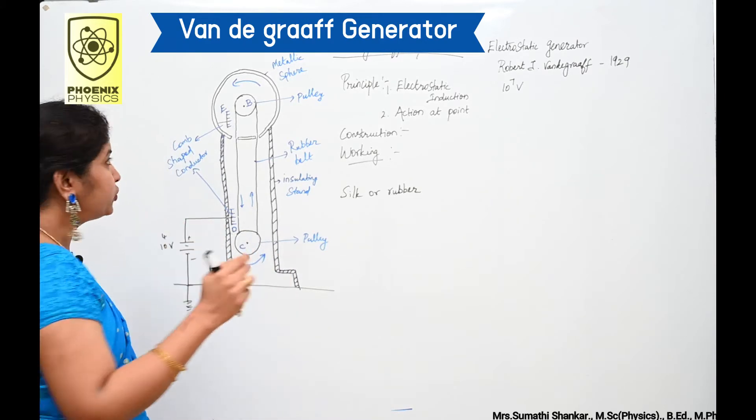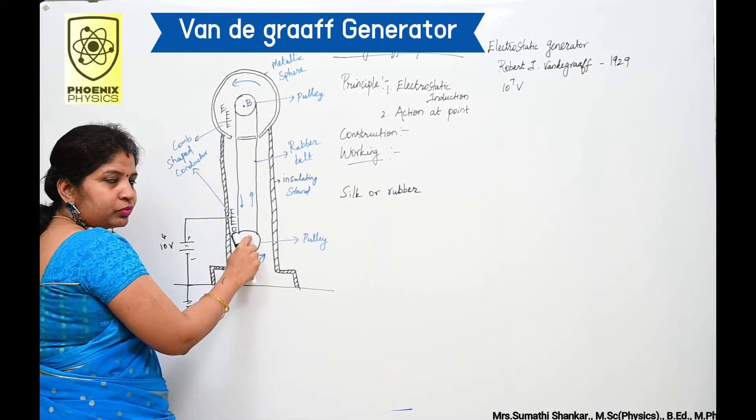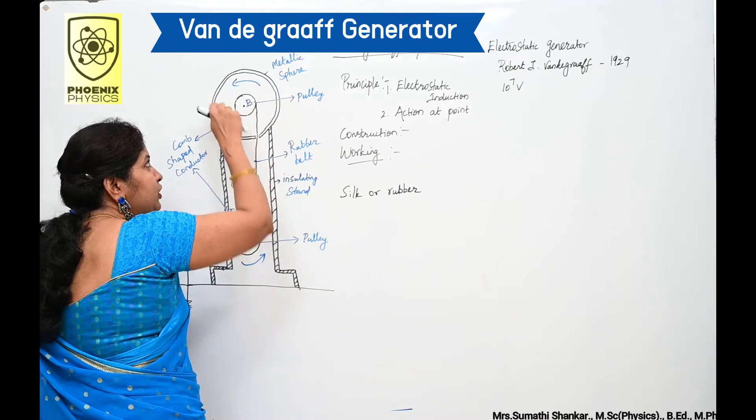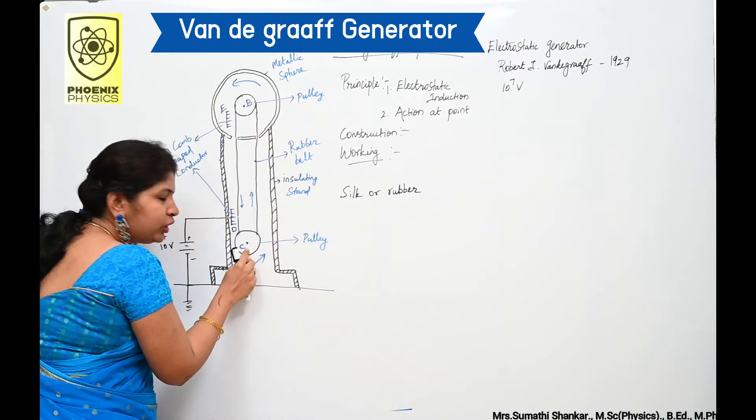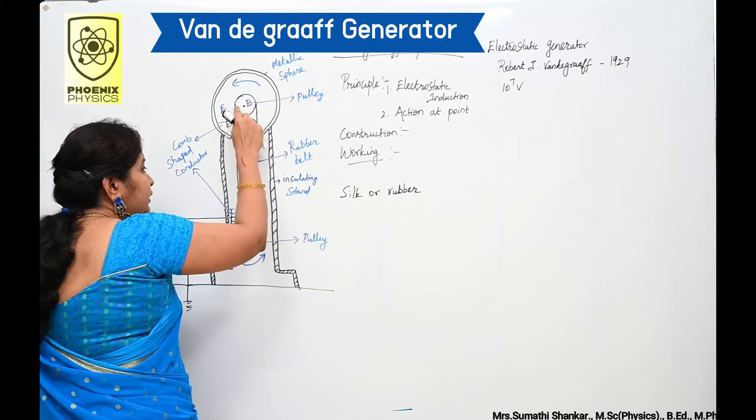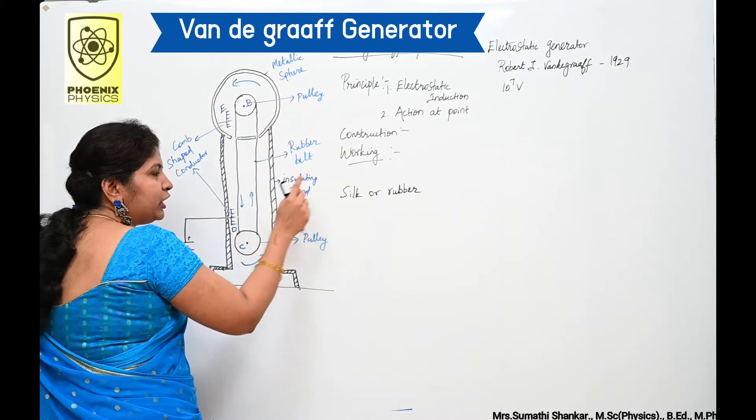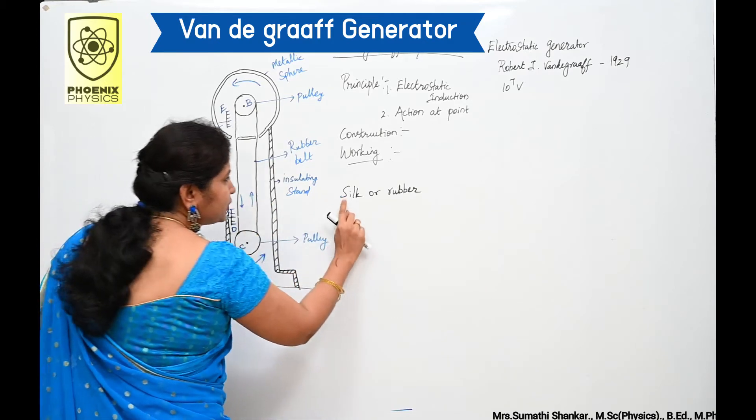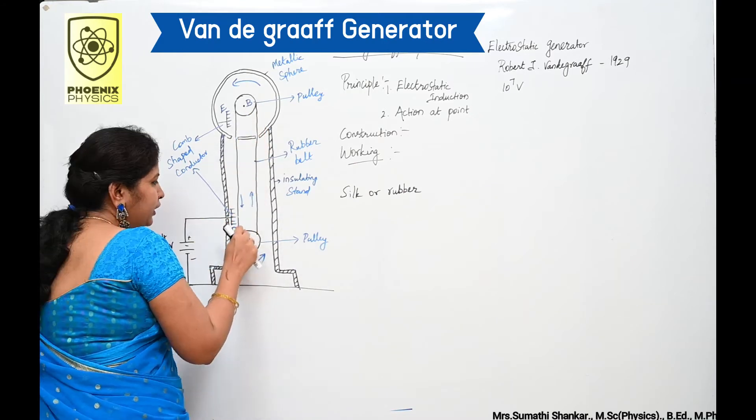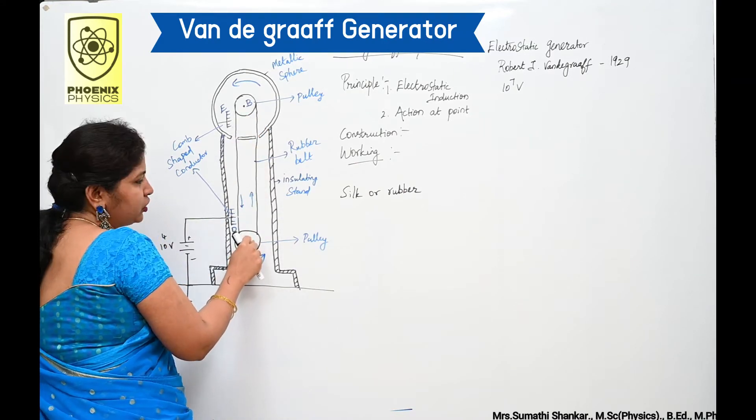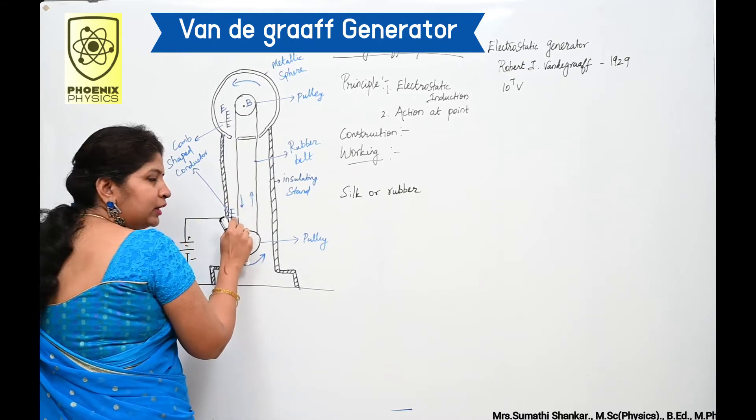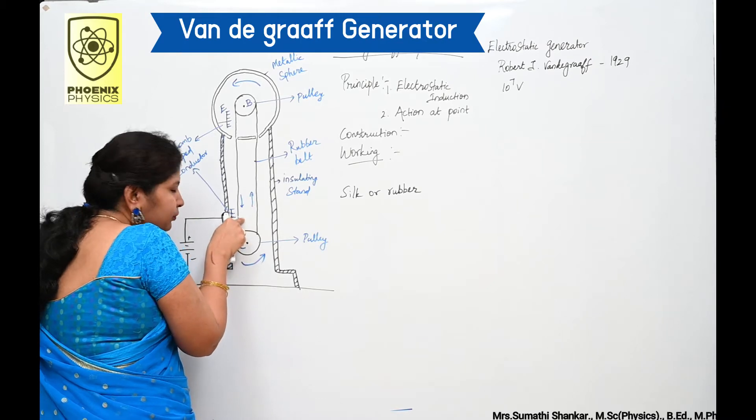Here I have two pulleys B and C. Pulley B is fixed at the center of the sphere and pulley C is fixed at the bottom. The belt made up of insulating material such as silk or rubber runs on both the pulleys, connecting B and C. Here I have two comb shaped metallic conductors fixed near the belt.